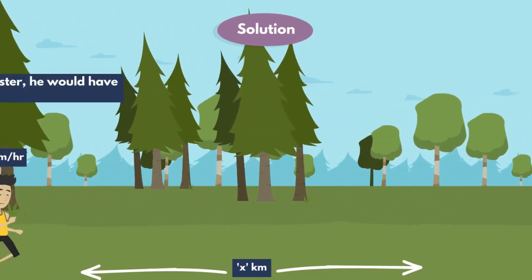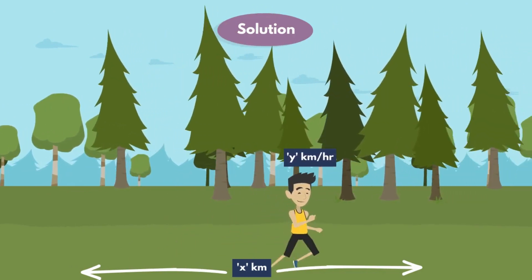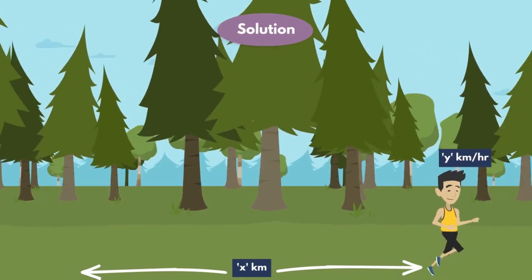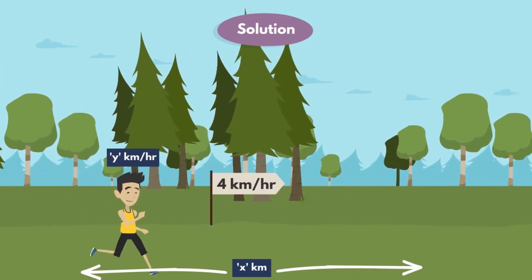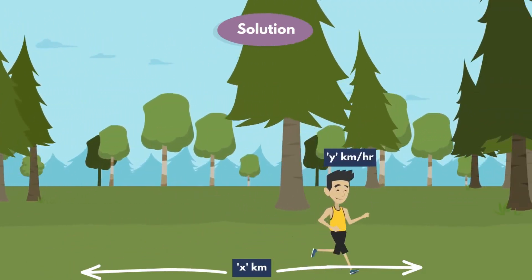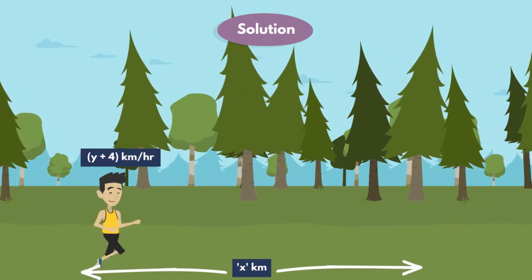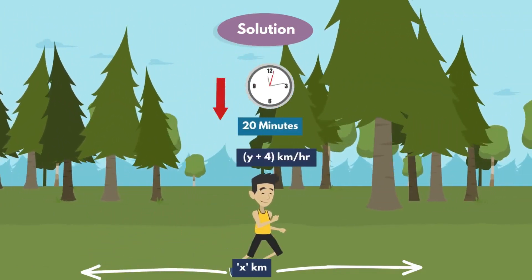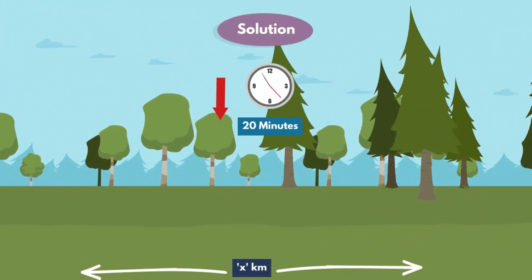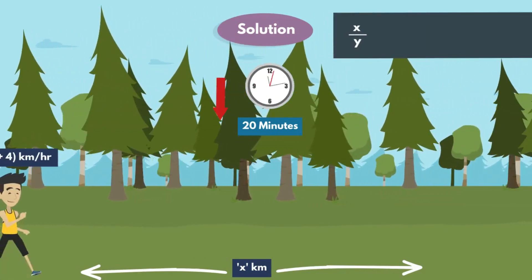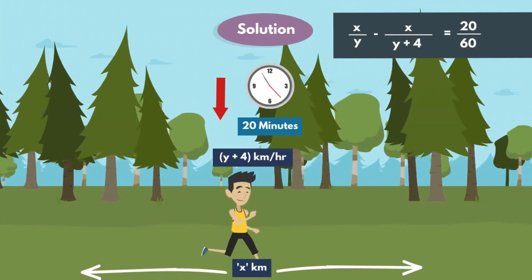In the next statement they given that had he moved 4 km per hour faster, he would have taken 20 minutes less. So here, the man moved 4 km per hour faster, then the speed of the man is y plus 4, and he would have taken 20 minutes less. So it can be written as x by y minus x by y plus 4, that equals to 20 by 60. This is equation 1.